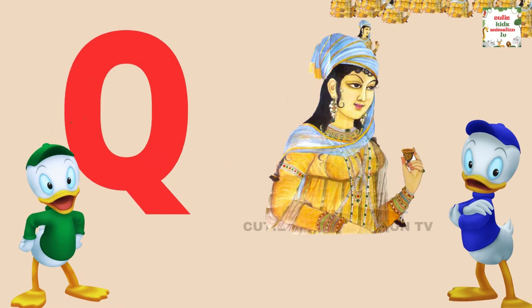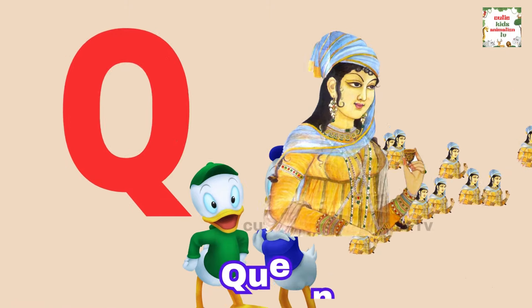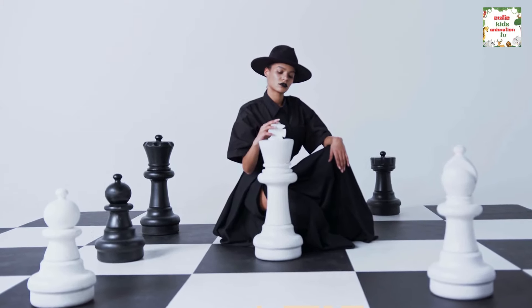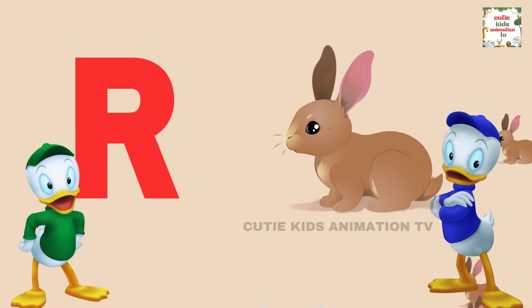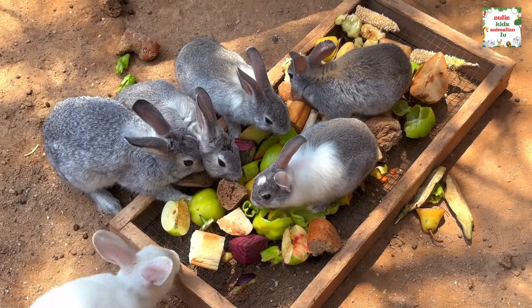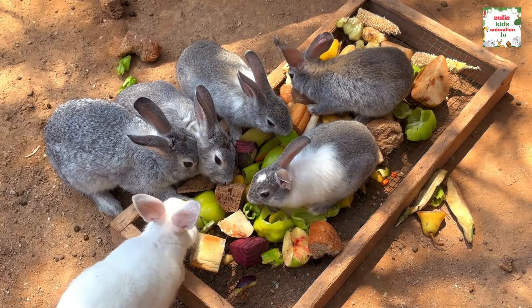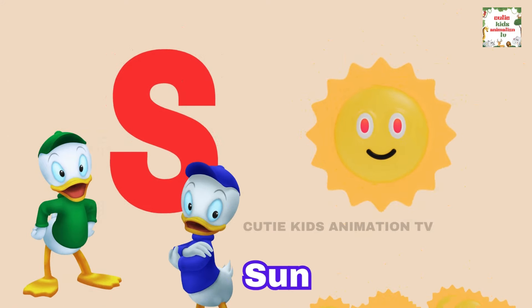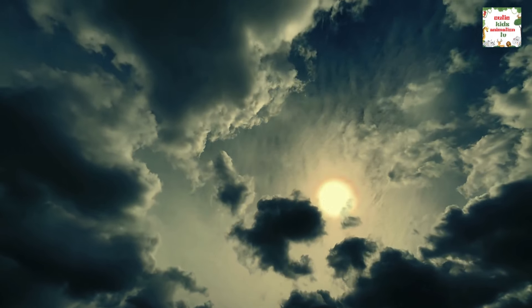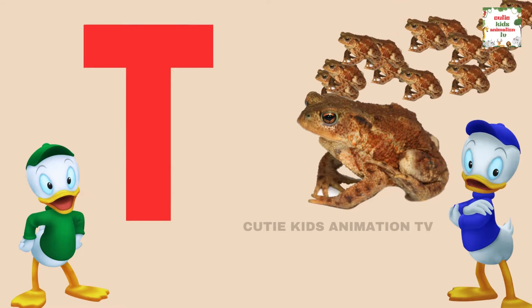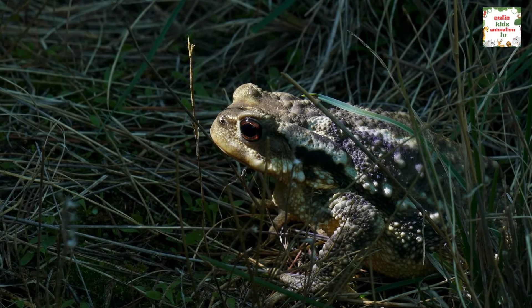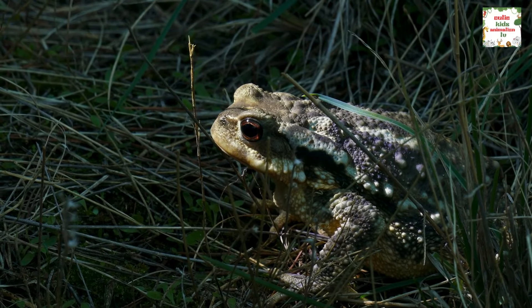Q is for Queen, Q-Q-Queen. R is for Rabbit, R-R-Rabbit. S is for Sun, S-S-Sun. T is for Toad, T-T-Toad.